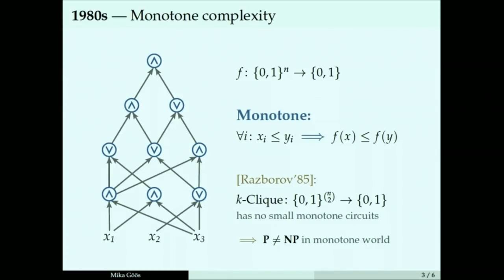I guess at the time, I wasn't there, but I would imagine this inspired people to some excitement. To separate P and NP in the actual non-monotone world, all you need to do is understand circuits that have, in addition to and and or, negation gates.